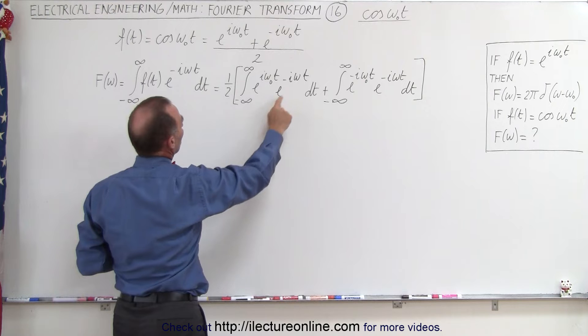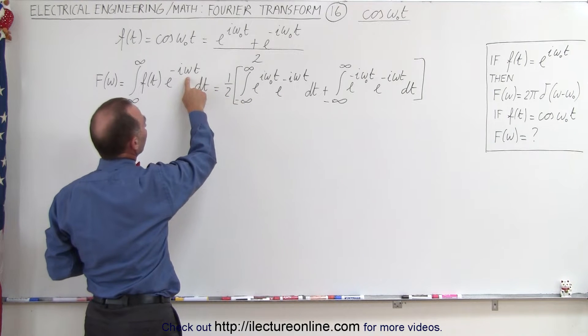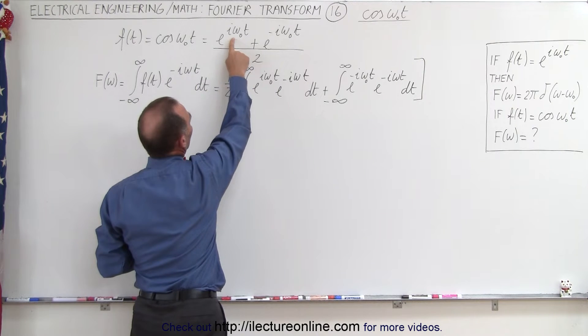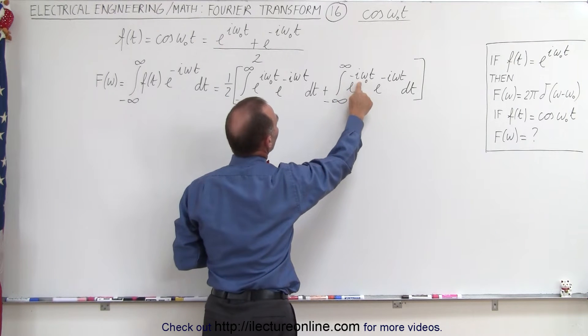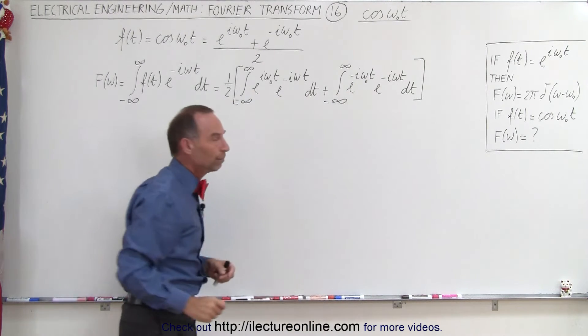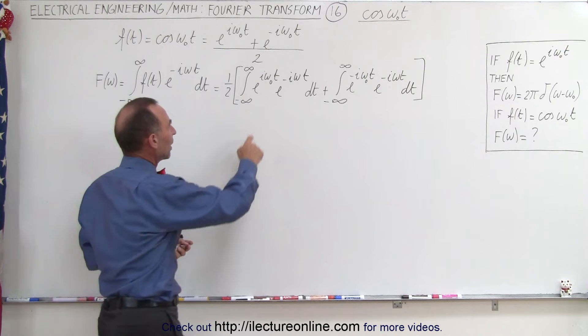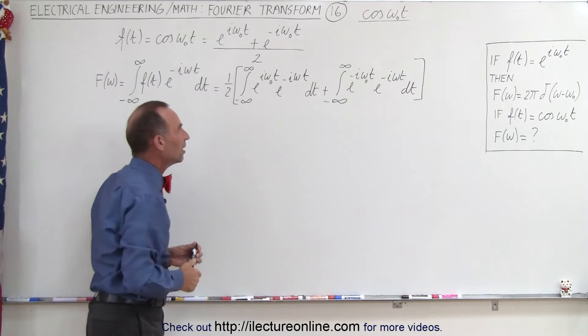We'll pull the one-half out, so we multiply e^(-iωt) by e^(iω₀t) in the first integral and by e^(-iω₀t) in the second integral. Both integrals are integrated from minus infinity to infinity.